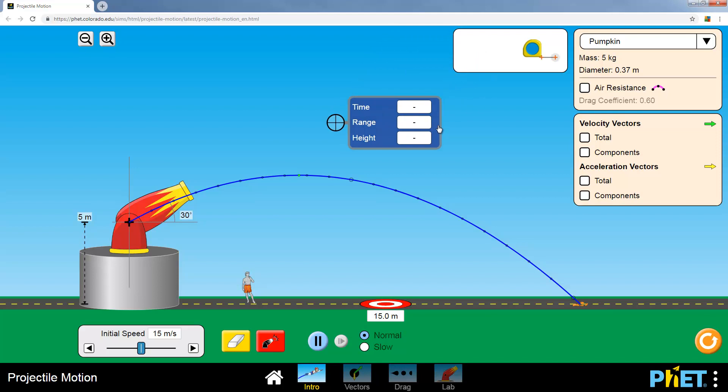Now if you grab this thing here, you can actually get the exact numbers. So if I put it right on here, see at a time of zero, its height starts at 5 meters. And the range is the horizontal distance that's traveled. We're not going to worry about that part. So if I move this, let's say to that point right there, at 0.4 seconds, it's 7.22 meters off the ground.